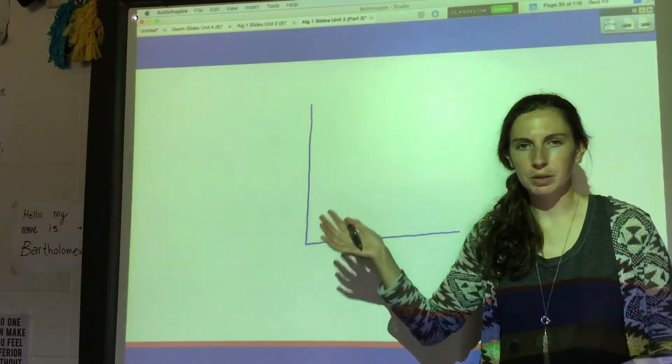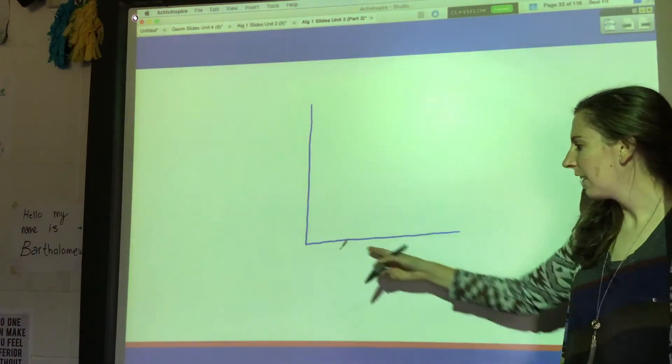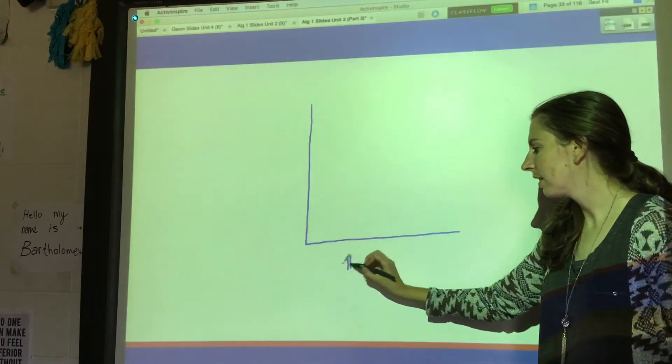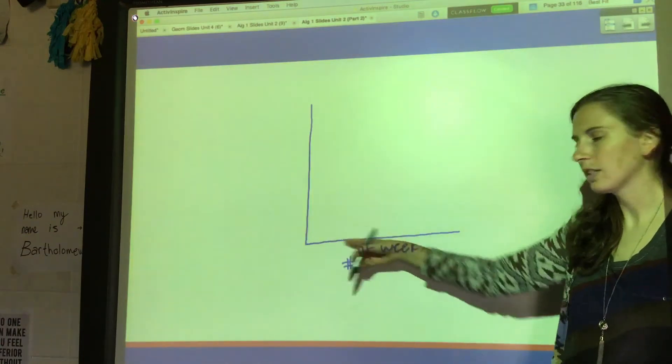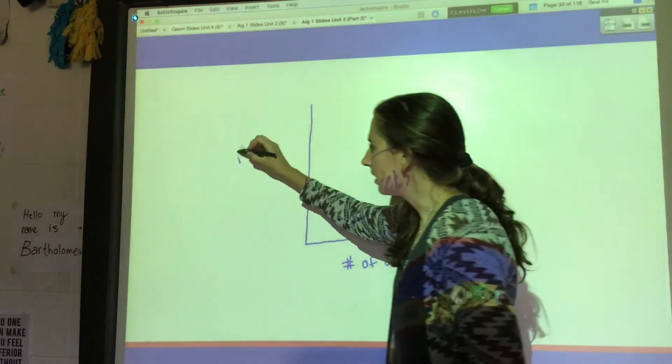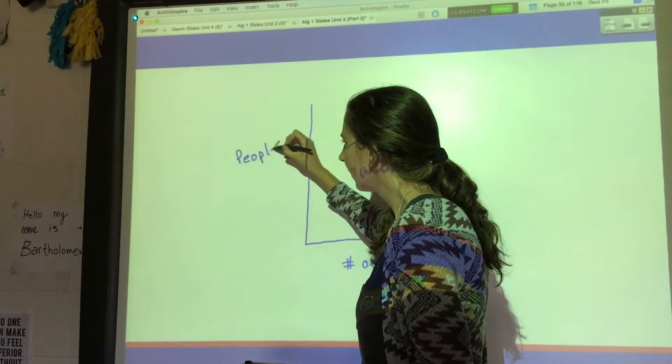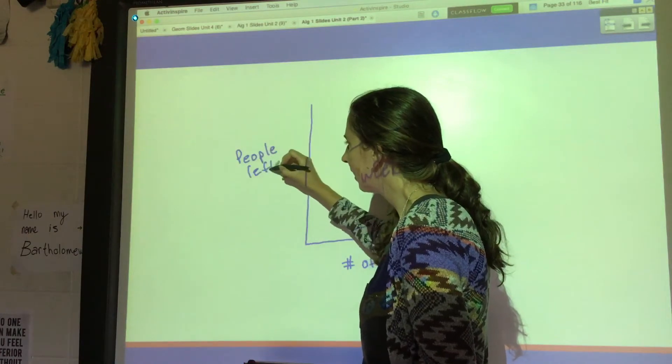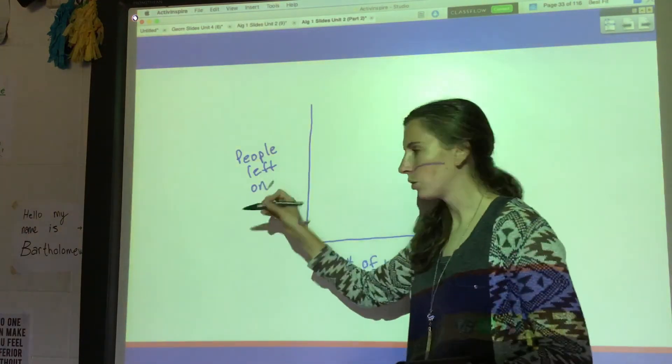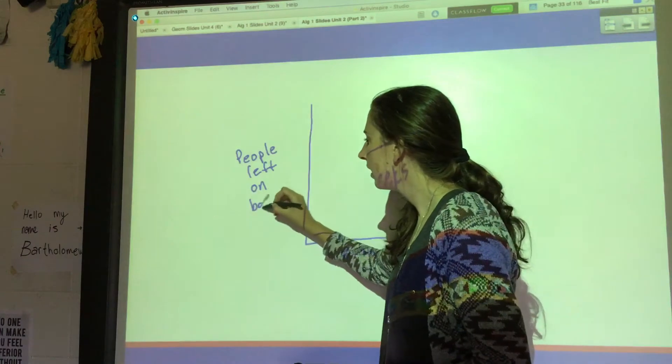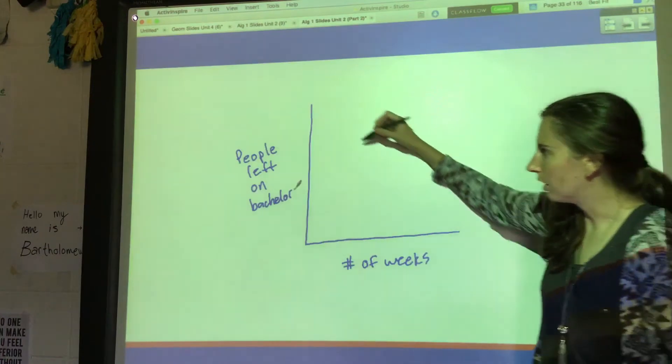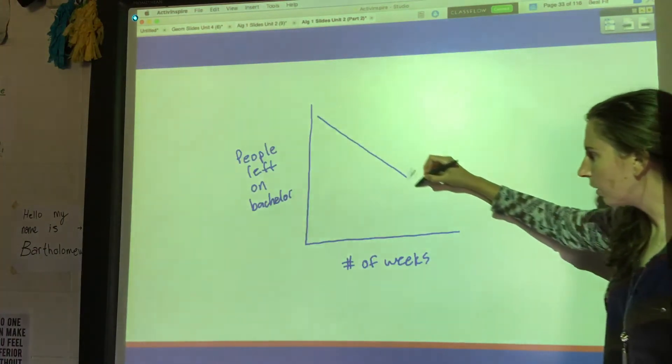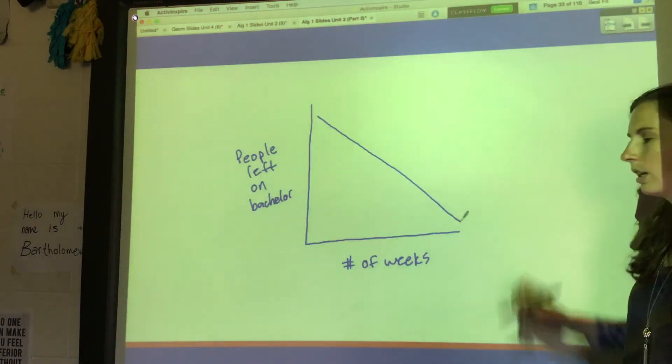number of people left on the Bachelor after a certain number of weeks. What do you think that graph would look like if this is the number of weeks and this is people left on the Bachelor? People get kicked off each week. I forget exactly how that show works, but basically the graph would look something like this - it would be going down until there's just one left.